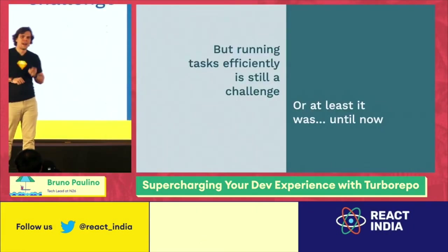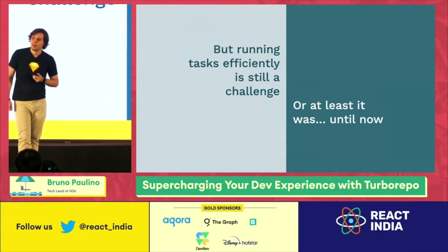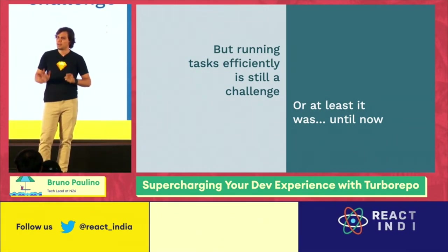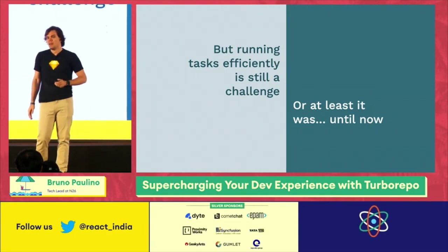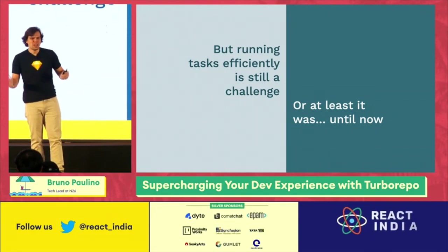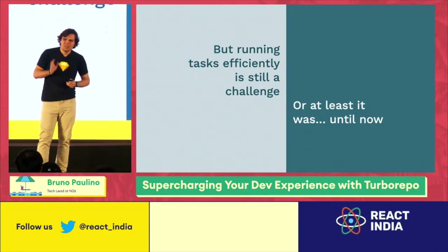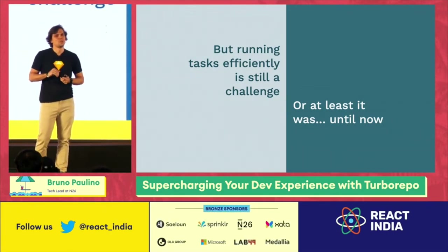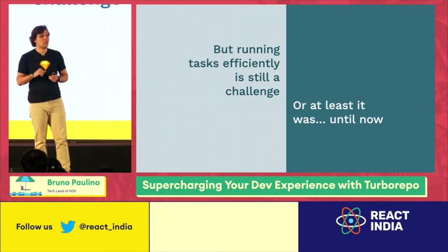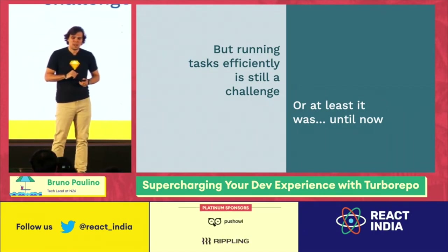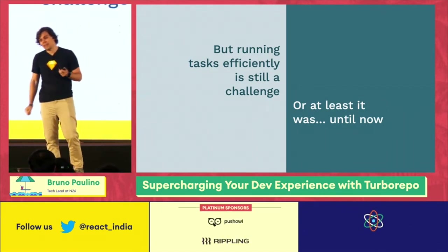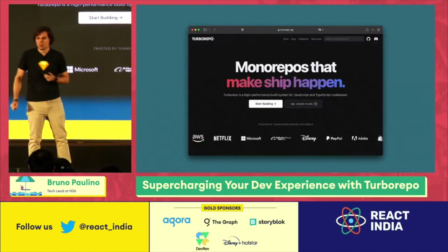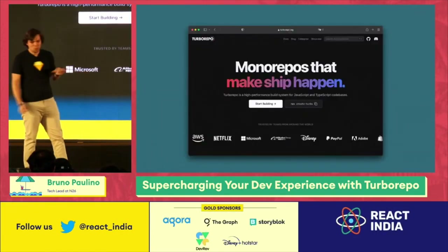But there's still a big challenge: running tasks efficiently in a monorepo is a real nightmare if you're just using plain workspaces. It works, but it's not very efficient — you have to wait for one task to finish before you can execute the next. That was the situation in the past, because now we have a solution for it, which is TurboRepo.